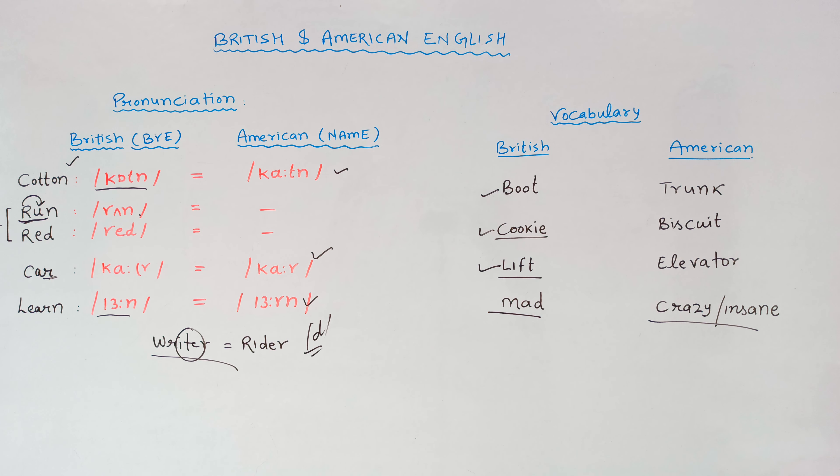Now let's talk about vocabulary differences. Britishers use 'boot' whereas Americans use 'trunk' — both refer to the storage space at the back of a car. Britishers use 'biscuit' while Americans use 'cookie'. In British English it's called a 'lift', while in American English it's an 'elevator'. In Britain, 'mad' refers to mental illness, whereas in American English the equivalent would be 'crazy' or 'insane'. That's enough for the day — thanks for watching.